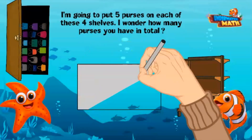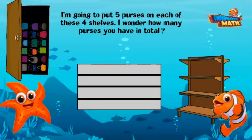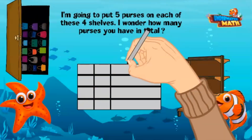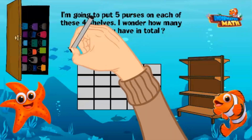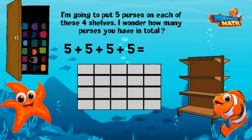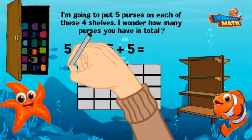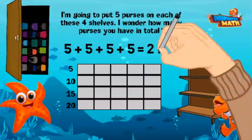Since there are four shelves, I'm going to draw four rows. If I can fit five purses on each shelf, I'll make five columns. Let's write a repeated addition equation to find the total number of purses: five plus five plus five plus five equals — let's skip count by fives to find the total: five, ten, fifteen, twenty!